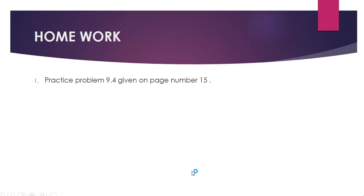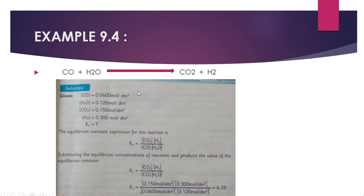The next example is example number 9.4 in which the equation is CO plus H2O and it will give carbon dioxide plus hydrogen. So I am directly showing you that you have to first put the data.